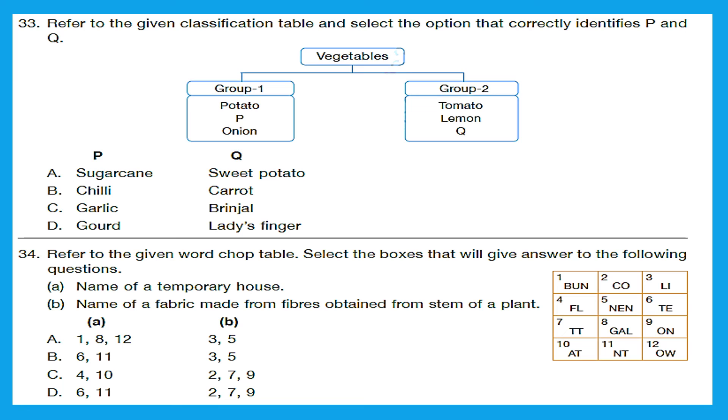Question 33. Refer to the given classification table and select the option that correctly identifies P and Q. Vegetable group 1 is potato, onion. That means it's a group of edible stem. So P is going to be edible stem. Then group 2, tomato and lemon. That means it is a group of edible fruit. So Q is going to be edible fruit. Let's see option A. A is sugarcane, so it is an edible stem, that's correct. Sweet potato is an edible root, so this is incorrect. Moving to the next one. B, that is chili. Now here chili is edible fruit, so it does not match the classification of P because P has to be edible stem. Moving to C, garlic. Yes, garlic is edible stem, that's correct. Brinjal, and brinjal is edible fruit. So this is the right option for us, option C.